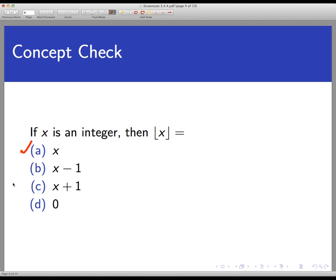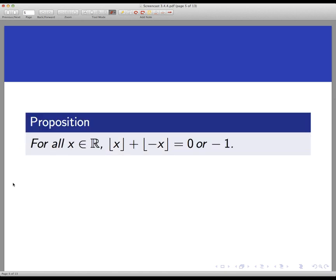So with those two concept checks, I think we have a sense of how the floor function behaves. And with that, we're ready for our proposition. We're going to prove that for all real numbers x, the floor of x plus the floor of minus x is either 0 or negative 1.